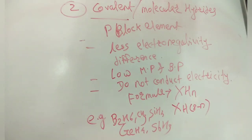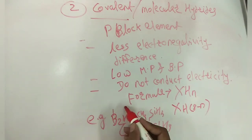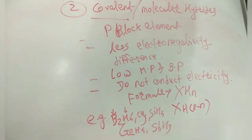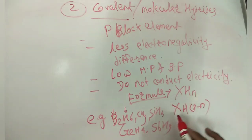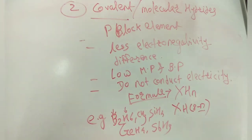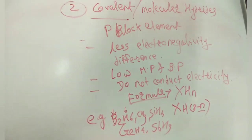To summarize covalent or molecular hydrides: they are generated from P-block elements; they have a very small electronegativity difference between the two atoms (for example, boron and hydrogen); they have low melting or boiling points; they do not conduct electricity; and their formula is XHn or XH(8−n), where n is the group number and X is the P-block element.